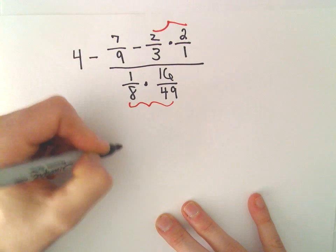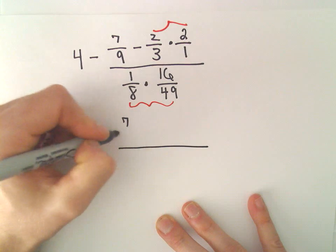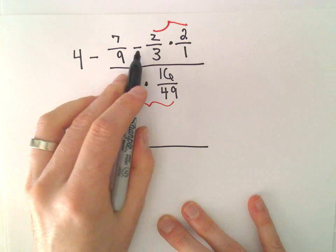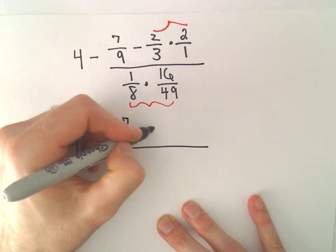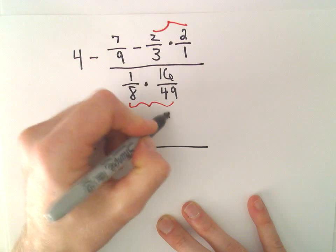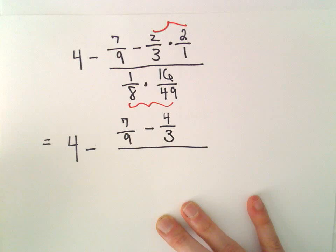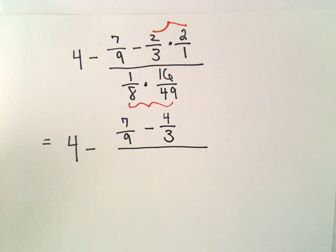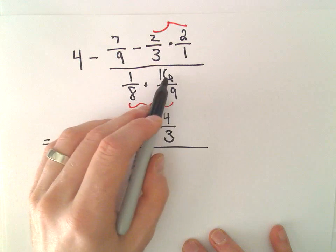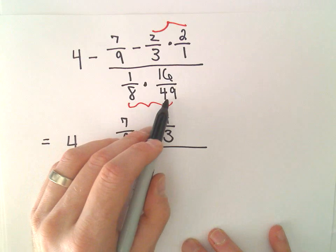All right, so this will be 4 minus, we have 7 ninths. I kind of think we have a negative times a positive, which is a negative. 2 times 2 is 4 over 3. Now, in the denominator, we could multiply 1 times 16 is 16, and then do 8 times 49. That's a yuck, a big number.